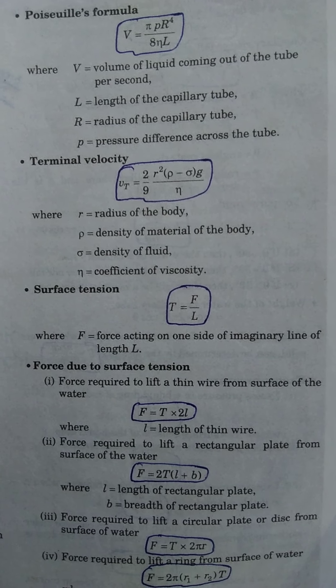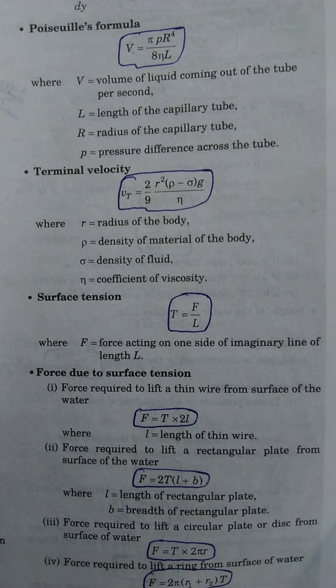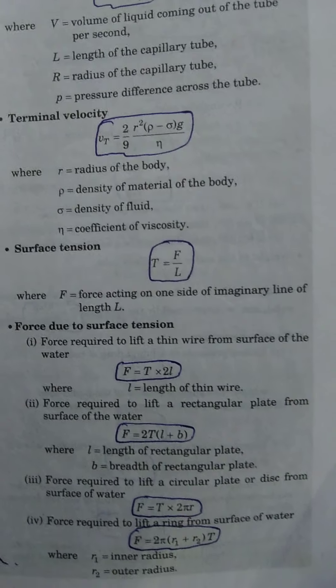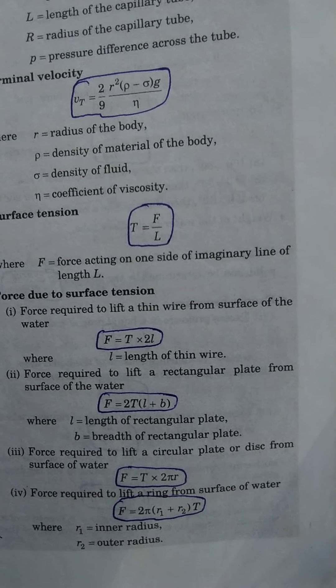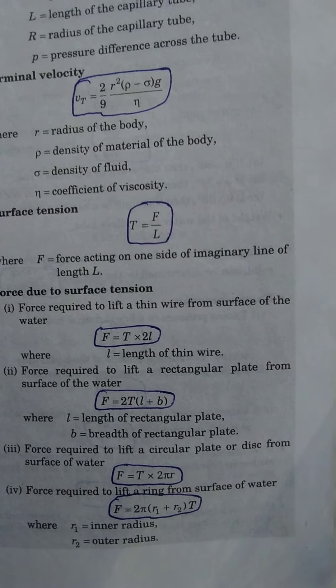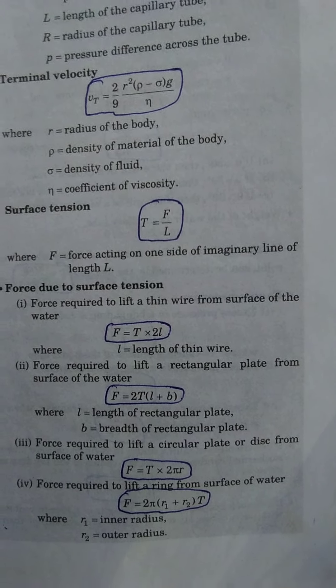Force required to lift a rectangular plate from the surface of water: F equals 2T(L+B), where L is the length of the rectangular plate and B is the breadth of the rectangular plate.